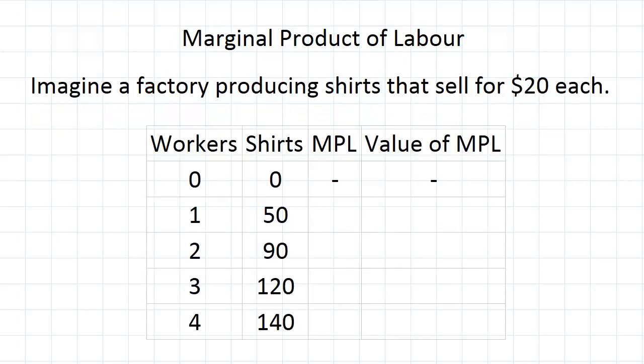Let's say we've got a factory where shirts are being produced and they sell for $20 each. When there are zero workers, obviously zero shirts get produced, and we don't worry about marginal productive labour at that point.